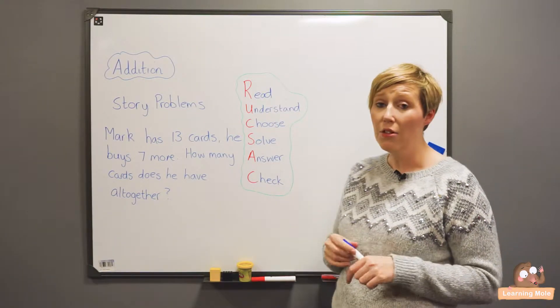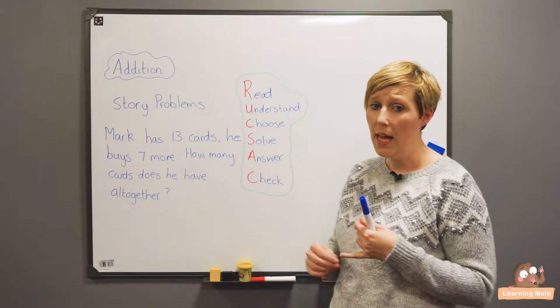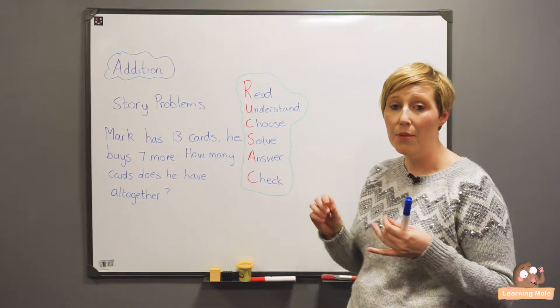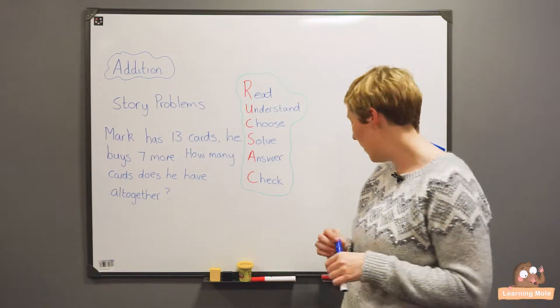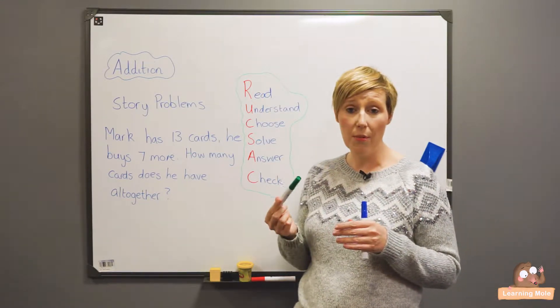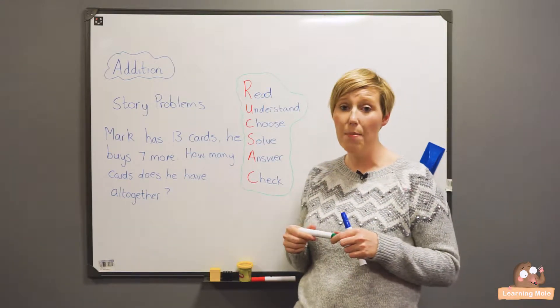My U means understand. So that's where I'm pulling out my key information. I'm going through my problem. I need to know what is important to me so that I can actually understand what I am doing. So I actually at this stage encourage children to get a different colour pen, a highlighter, whatever they want and to highlight the key points.